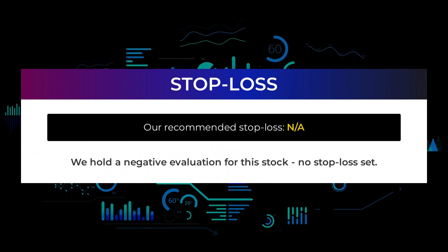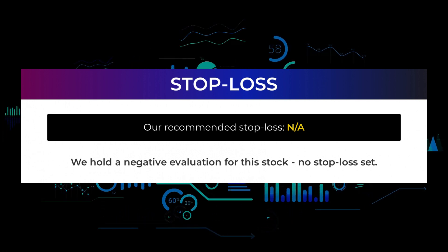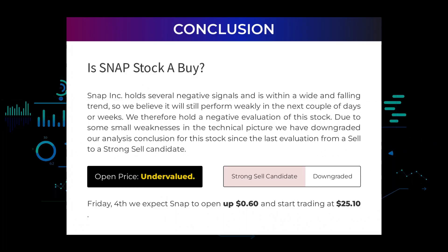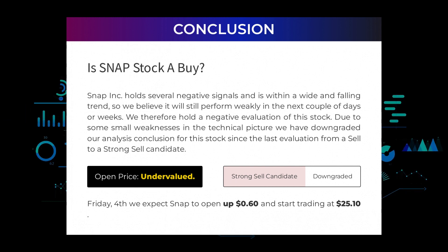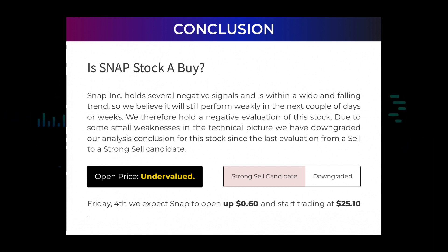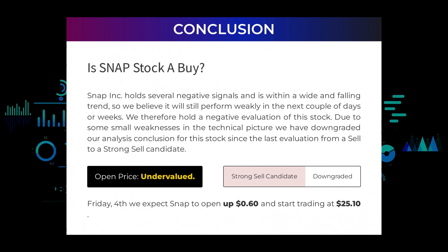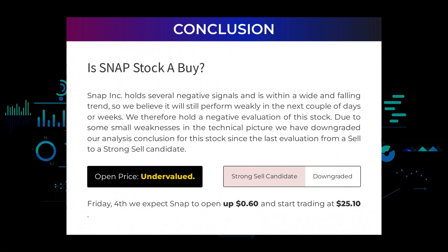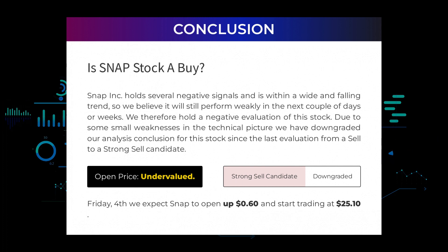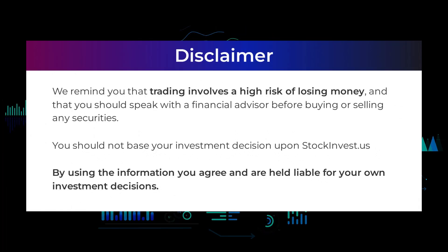We hold a negative evaluation for this stock with no stop loss set. Is Snap stock a buy? Snap Incorporated holds several negative signals and is within a wide and falling trend, so we believe it will still perform weakly in the next couple of days or weeks. We hold a negative evaluation of this stock, and due to some small weaknesses in the technical picture we have downgraded our analysis conclusion from a sell to a strong sell candidate. After analyzing volatility and movements for the last trading day, our systems find that the current price is undervalued. For trading on Friday 4th, we expect Snap to open up 60 cents and start trading at $25.10.